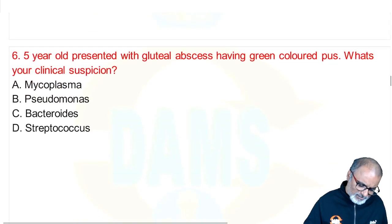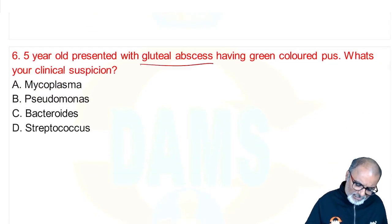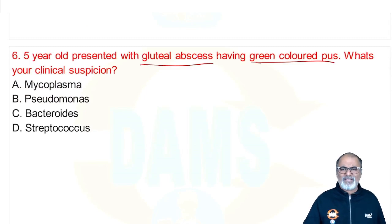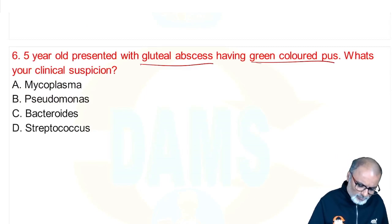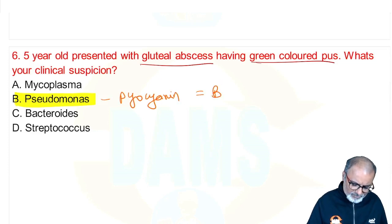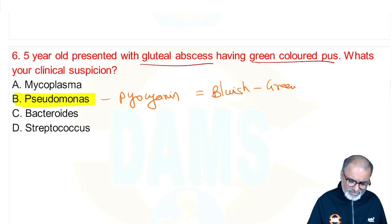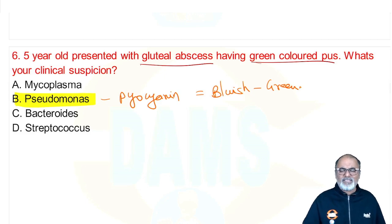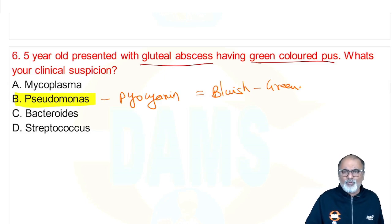A 5-year-old presents with gluteal abscess having green-colored pus. Where there is green-colored pus, think of Pseudomonas aeruginosa, because of a pigment called pyocyanin — a bluish-green pigment. It also causes green nail syndrome. Green or blue pus — think Pseudomonas first.